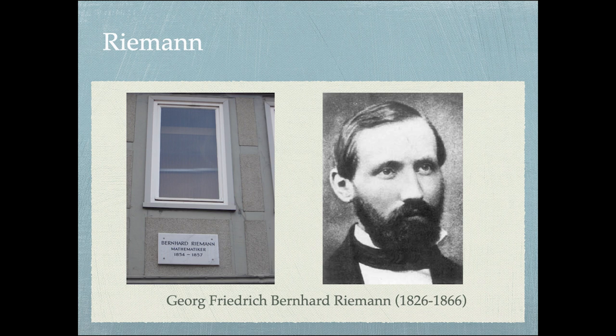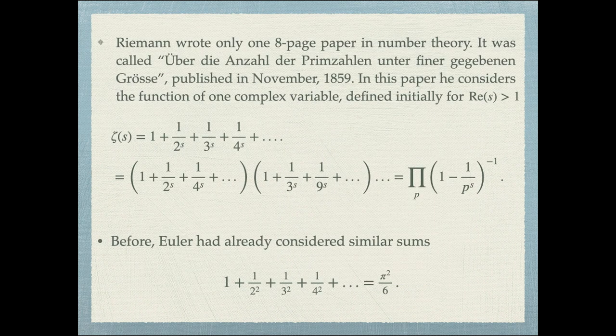Here's one of our main actors, Riemann. He had a short life — he was 39 years old when he died. He was a professor at Göttingen. He had several marvelous contributions to mathematics, notably the Riemann integral, Riemannian geometry, and many more contributions. In number theory, he wrote just one paper, but it turned out to be a very influential paper — an eight-page paper published in November of 1859, in which he discusses some properties of what became known as the Riemann zeta function.